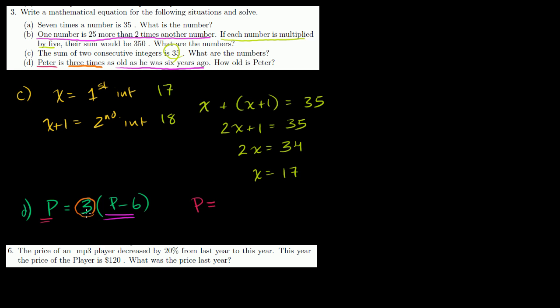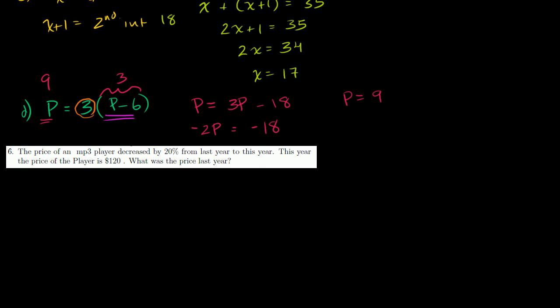So we get p is equal to, distribute the three. Three times p is 3p minus three times 6 is 18. Now we can subtract 3p from both sides of the equation. We get minus 2p, right? p minus 3p is minus or negative 2p is equal to negative 18. And divide both sides by negative 2. And you get p is equal to 9, right? Just multiply both sides by negative 2. And you can verify it. Right now, he's nine. Six years ago, he was three. And he is three times as old as that, right? Six years ago, he was three. And at nine years old, he is three times as old as he was six years ago. So it definitely works out. That's the cool thing about algebra. You can always check your work. You always know when you got the right answer.